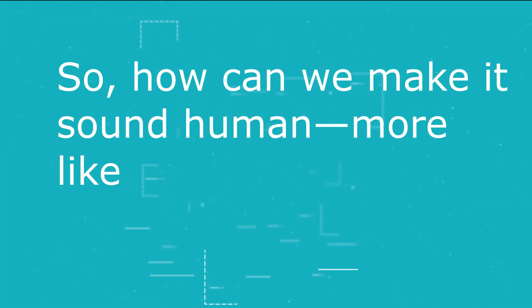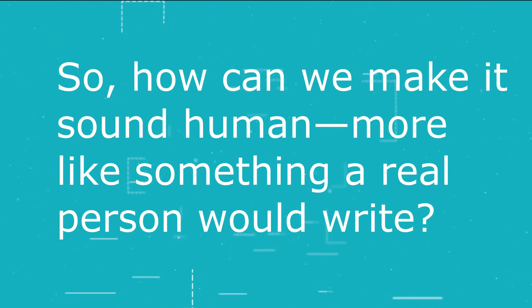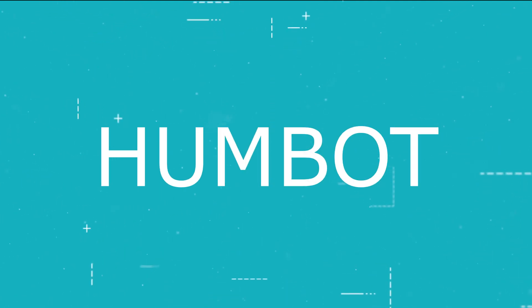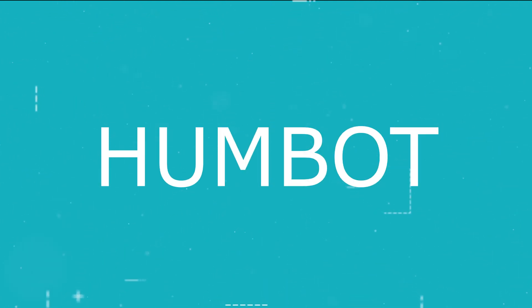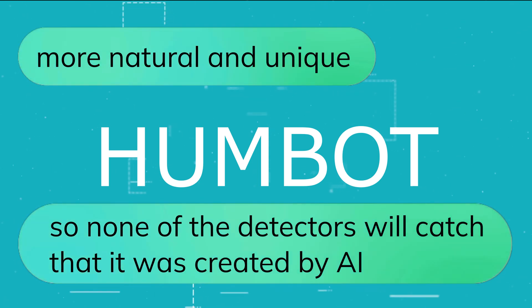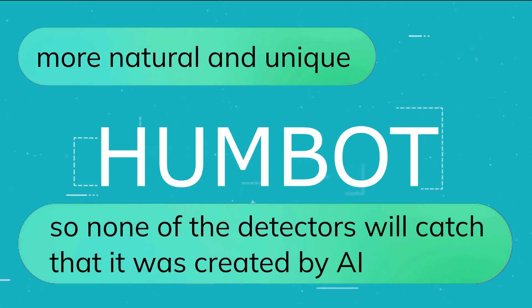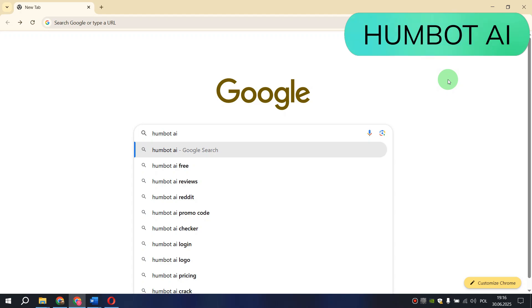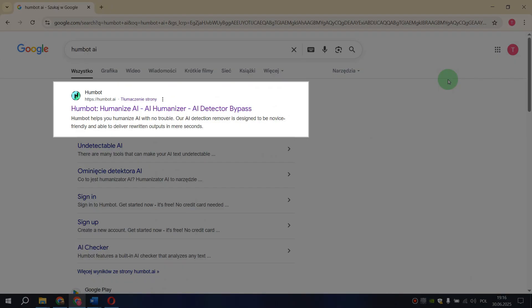So how can we make it sound human — more like something a real person would write? To do this, you need to use a service called HumBot. The link will be in the description of this video. With this service you can make your text more natural and unique, so none of the detectors will catch that it was created by AI. Go to Google and type HumBot AI, then hit Enter. Here we see the HumBot service, which will rework our text in a few seconds.